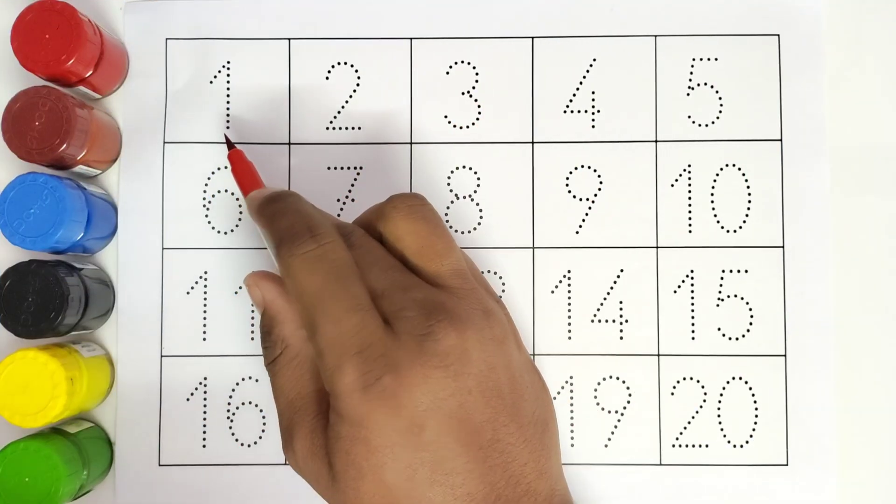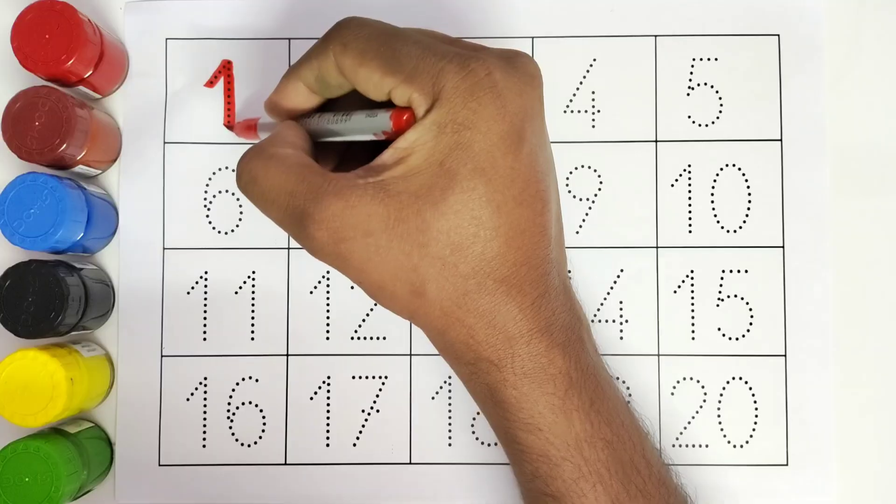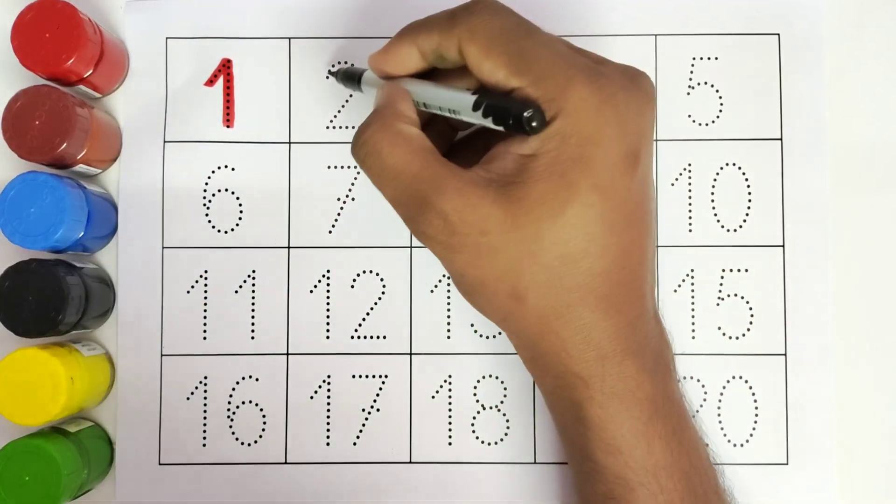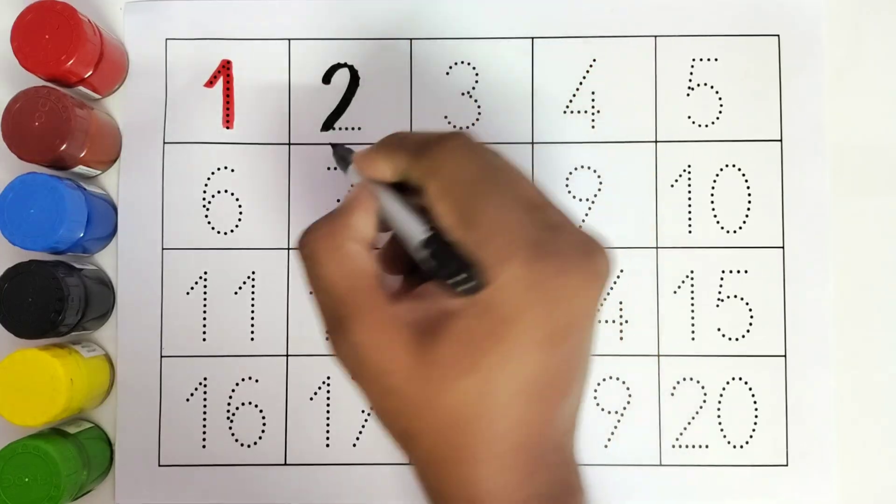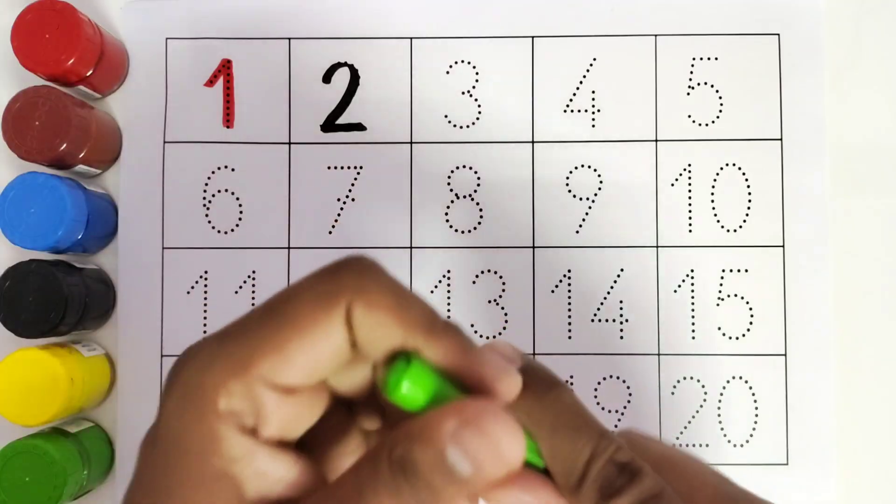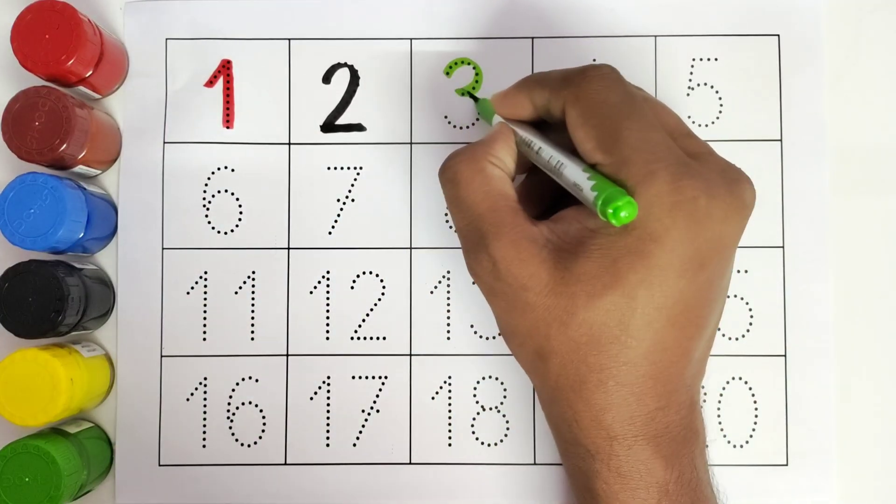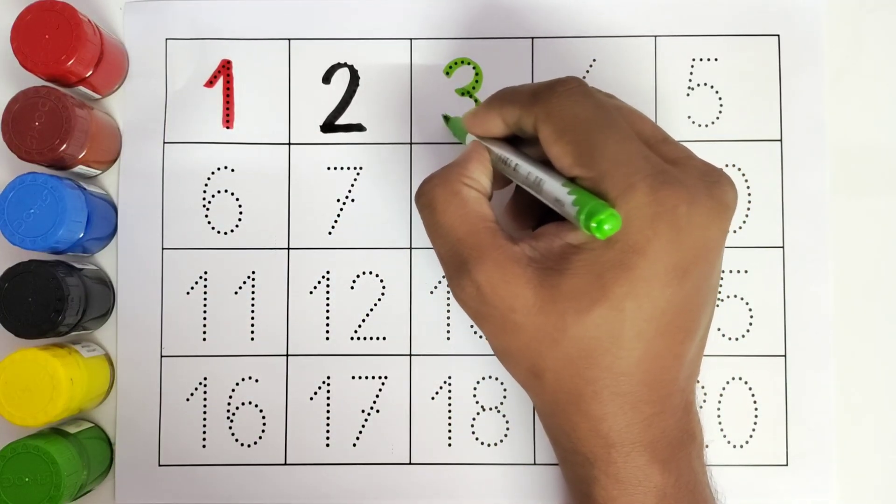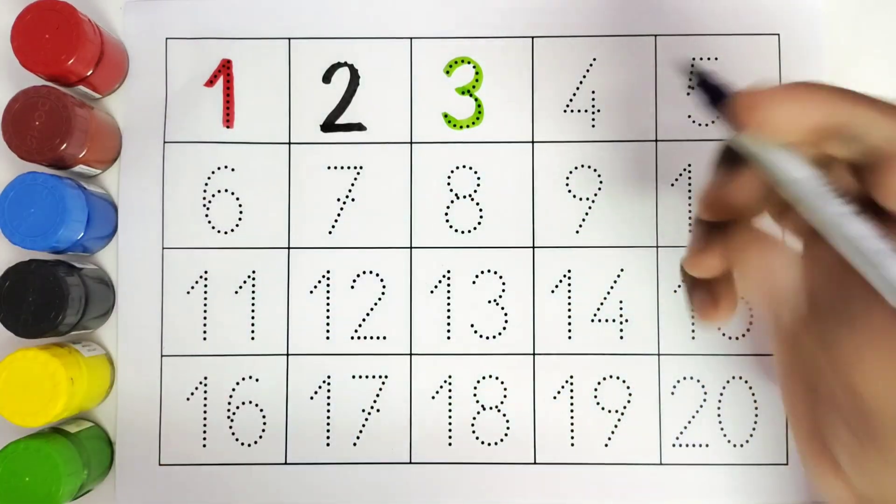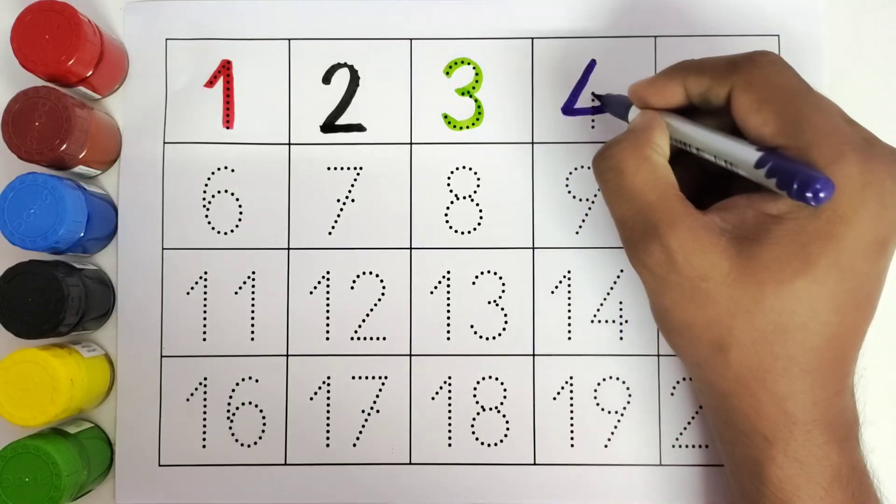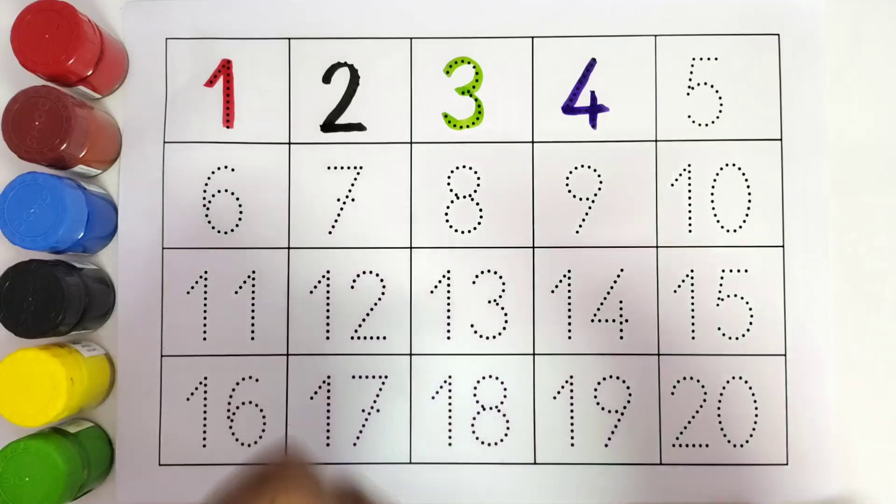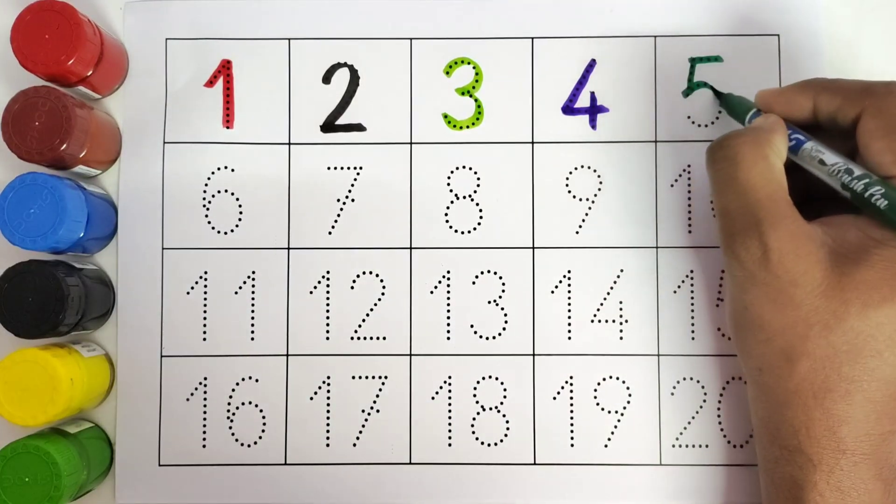This is one, number one. This is two. Two, three, three, four, four, five, five.